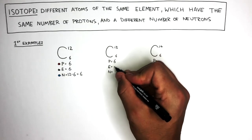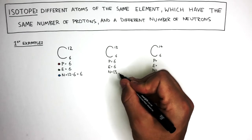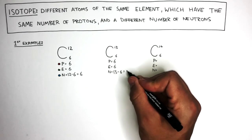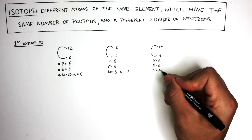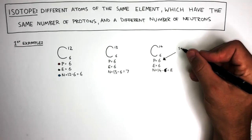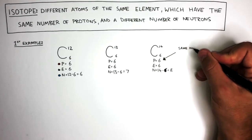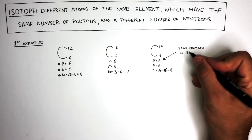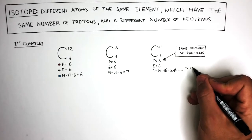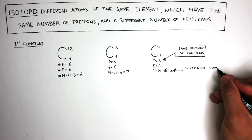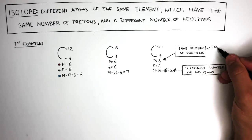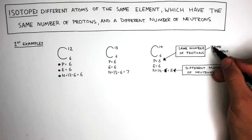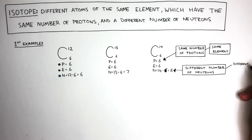Carbon-13 has 6 protons, 6 electrons, but 7 neutrons. Carbon-14 also has 6 protons, 6 electrons, but has 8 neutrons. You can see that all three isotopes have the same number of protons. However, each isotope has a different number of neutrons. All three isotopes are the same element but they're different atoms because they have a different number of neutrons.